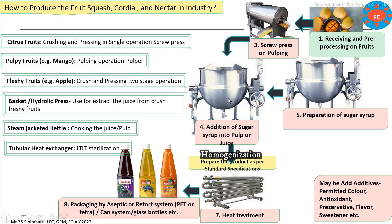The main processing parameters are: extraction of juice and pulp, standardization including addition of sugar syrup, cooking of the product, passing the prepared product through heat exchangers for complete standardization, and then packaging. These processing steps are similar for squash, cordial, nectar, crush, and the syrup processing line.